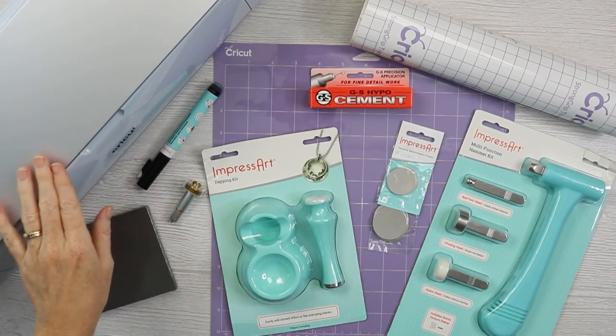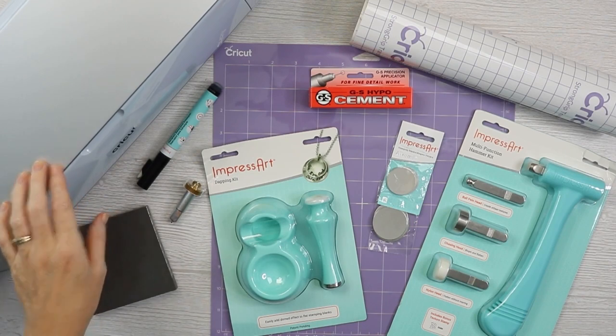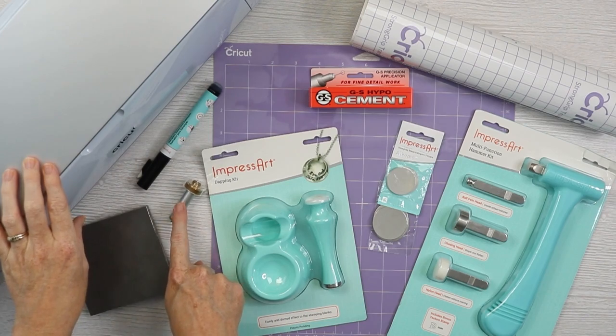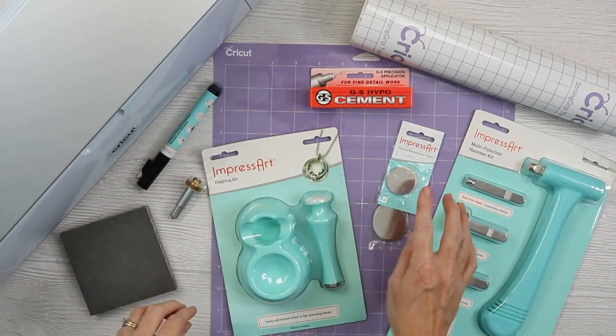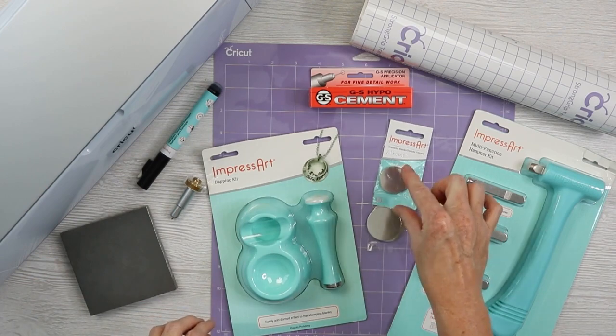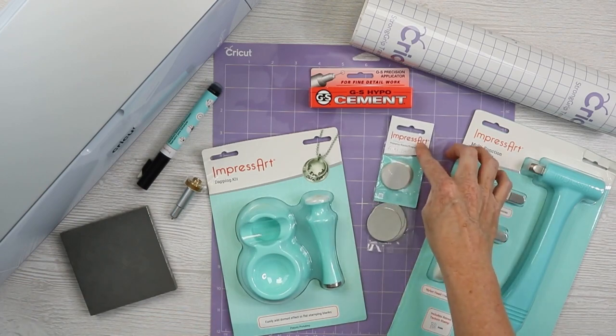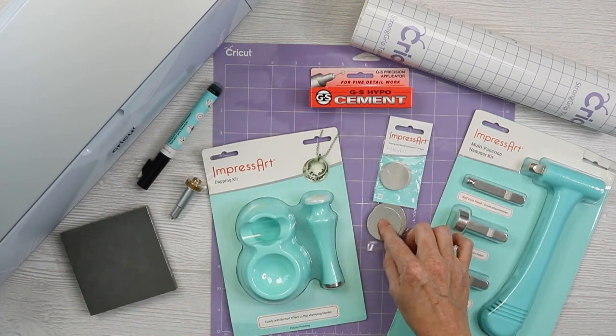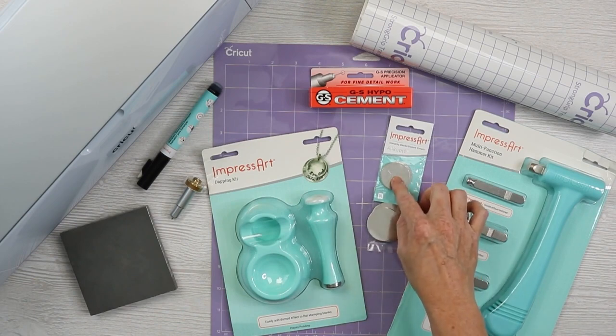So I'm going to use my Cricut Maker 3. You can also use the Cricut Maker, but it does need to be a maker for the engraving tip, which we're going to use with the quick swap housing. Then we are going to use stamping blanks from ImpressArt. I'm going to use a one and a half inch and then one that's somewhat smaller.